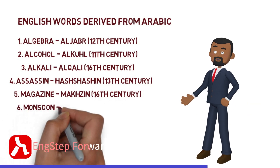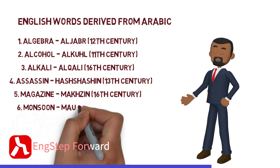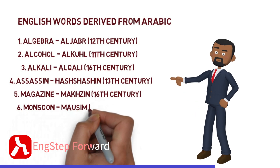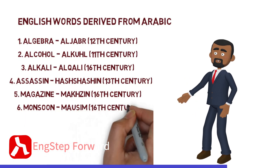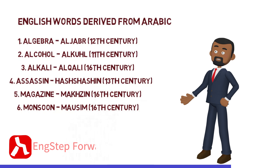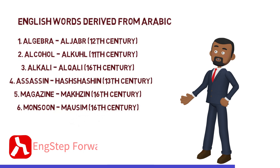Number 6: Monsoon. Monsoon is derived from Mawsim, and became part of the English language in the 16th century.